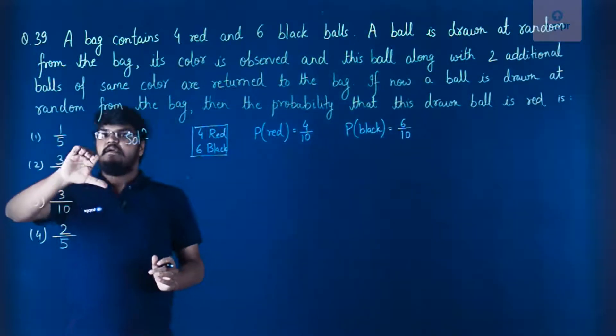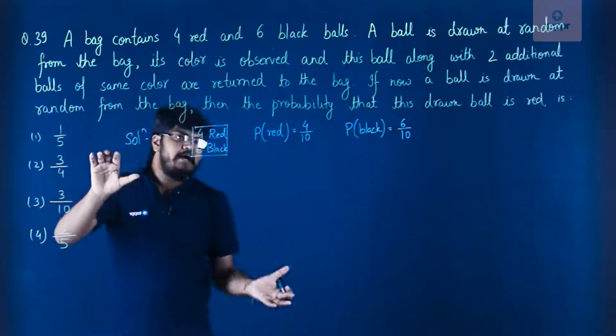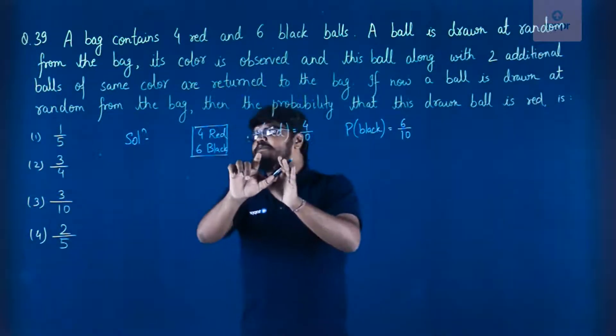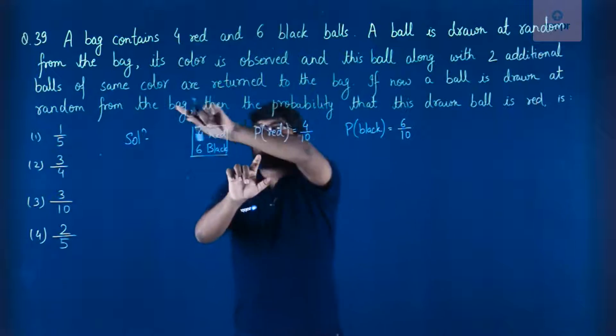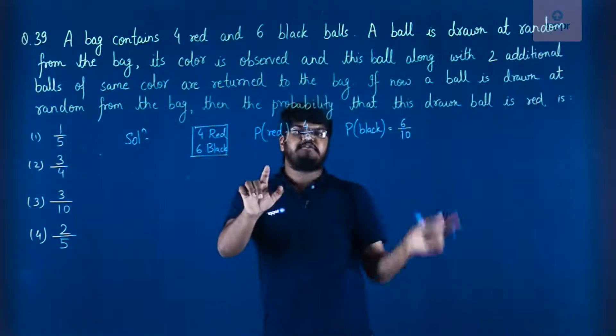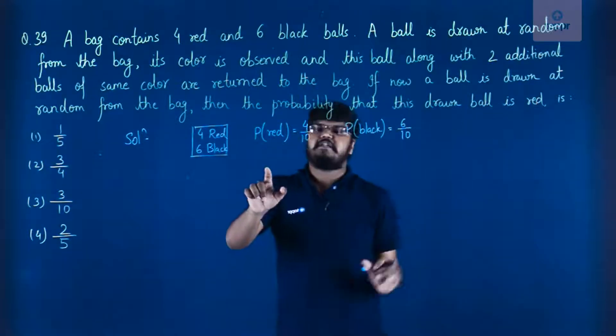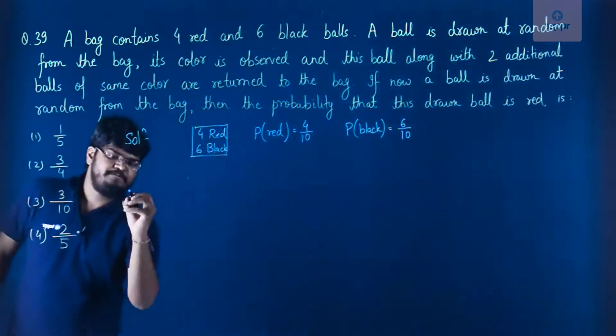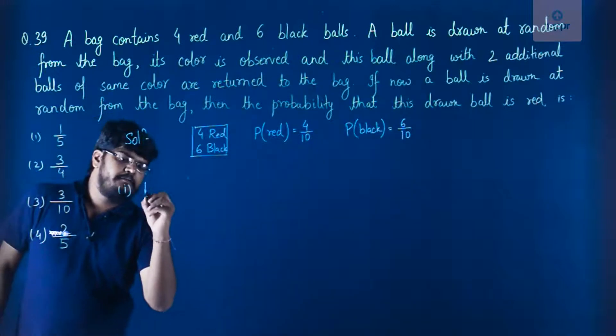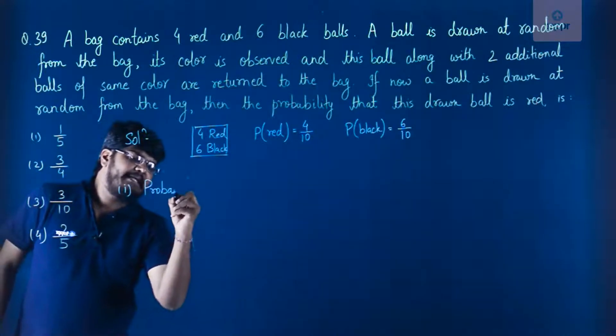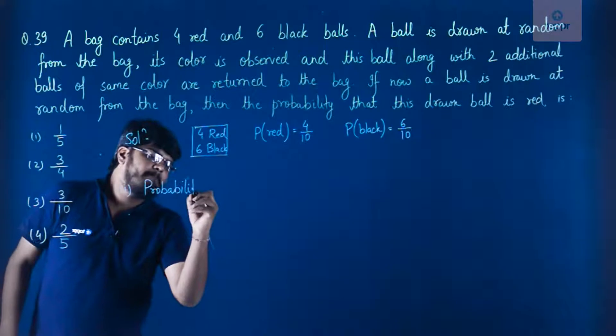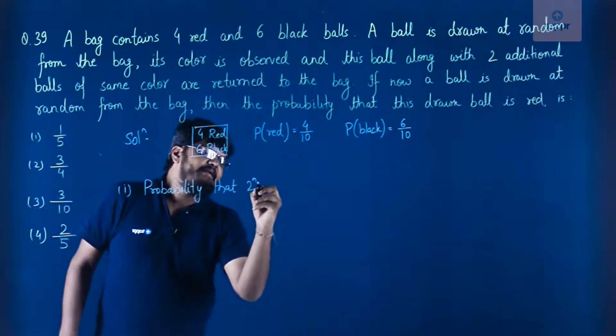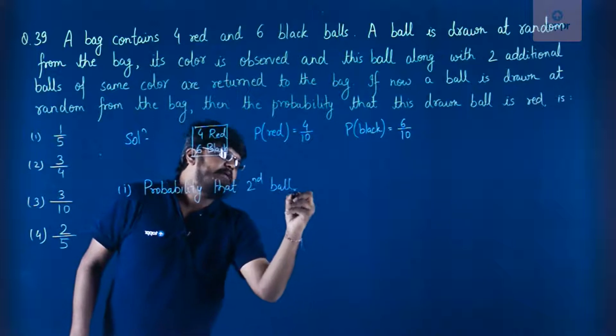Now what do we have to do? So after the ball is drawn, be it red or be it black, this color is observed and then this ball along with two additional balls of the same color are returned to the bag. And now we have to find out the probability that the new ball which is drawn is red.